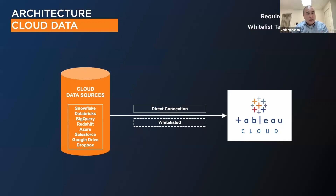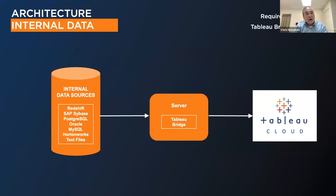If you're connecting to cloud data sources, you connect directly from Tableau Cloud to Snowflake, Databricks, Google Drive, etc. For security, you can whitelist Tableau Cloud's IP address in Snowflake so only Tableau Cloud can connect externally. This is the easiest migration scenario — if you're migrating from Tableau Server and have only cloud data sources, it requires the least work and is the most straightforward approach.